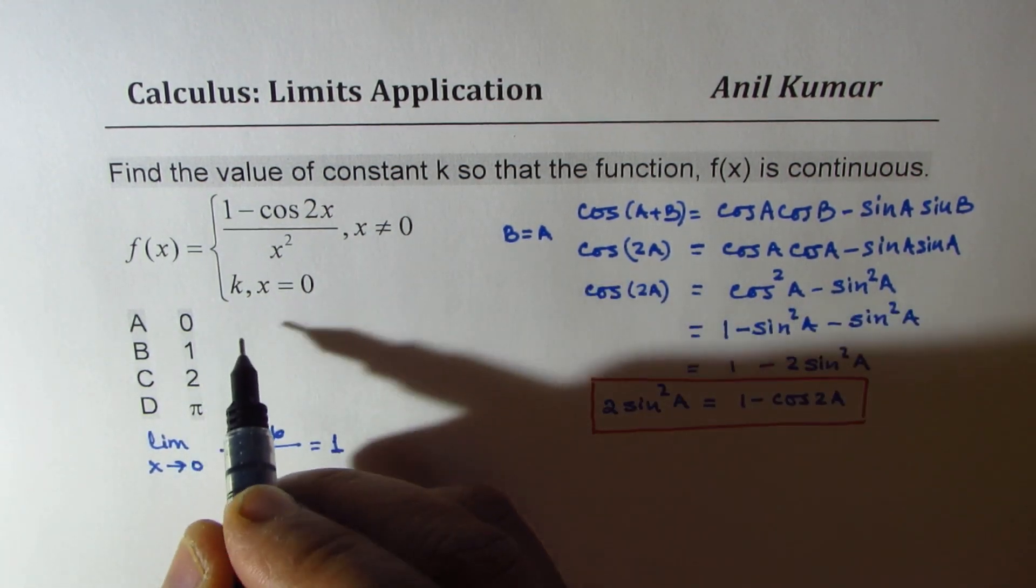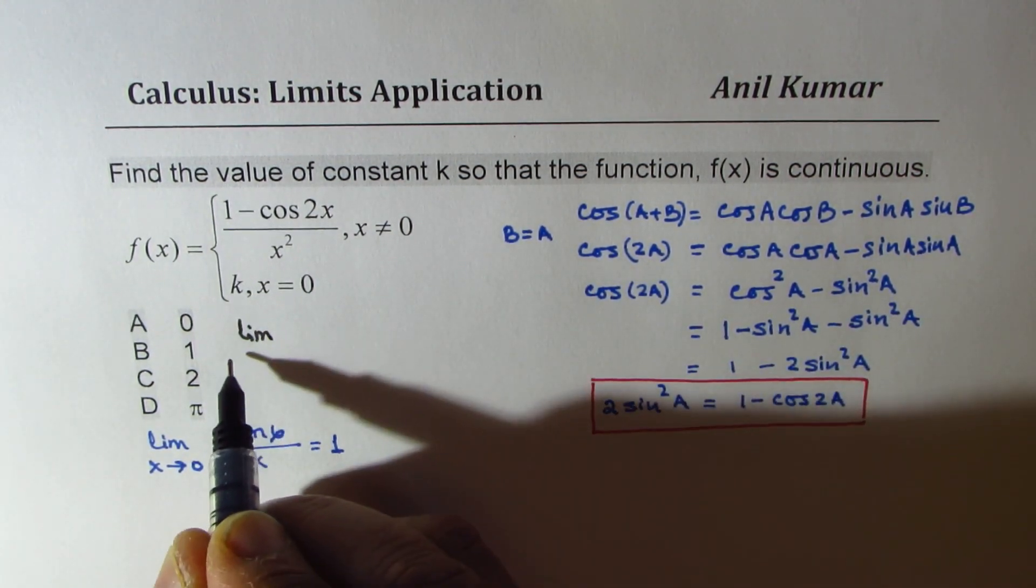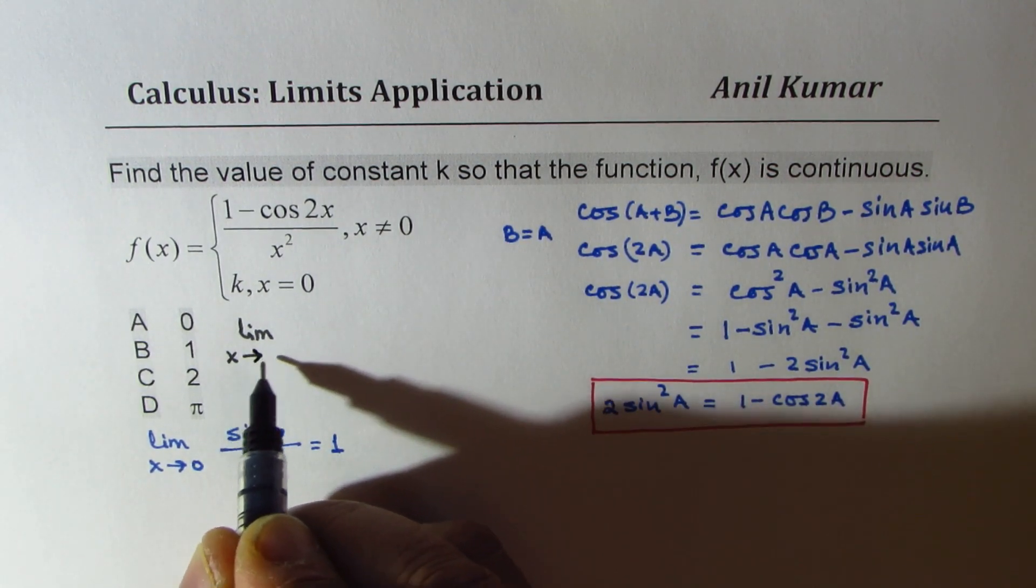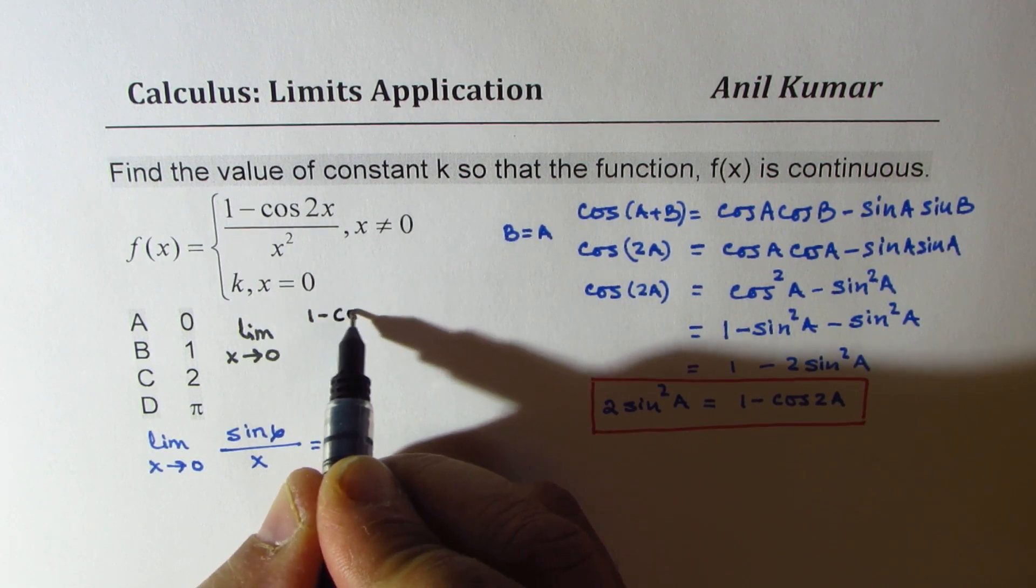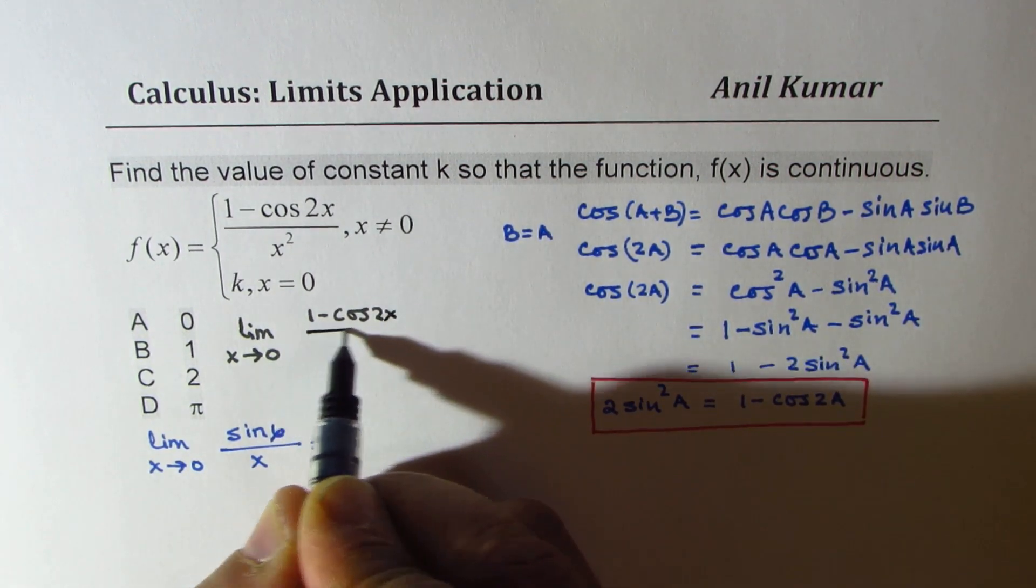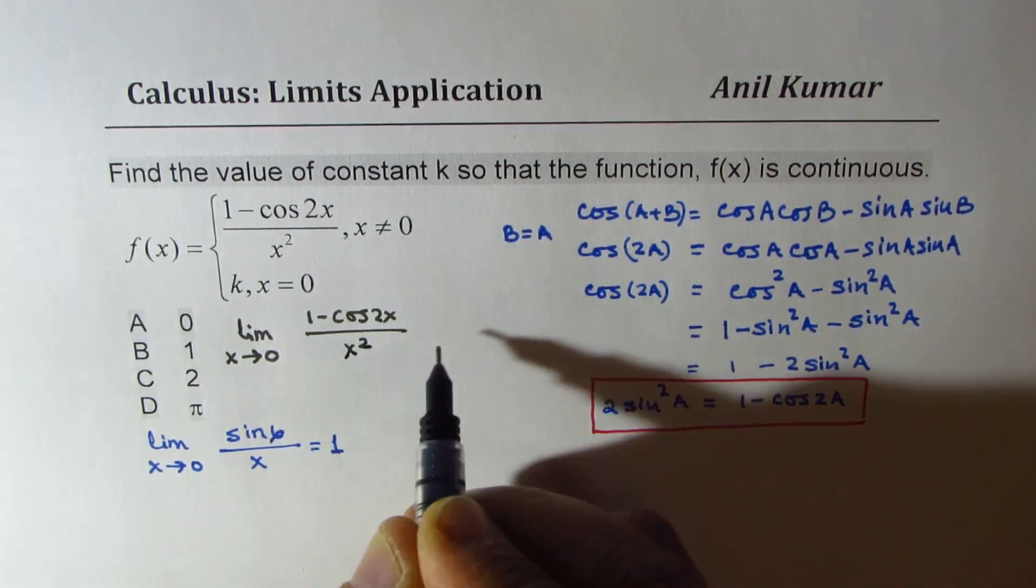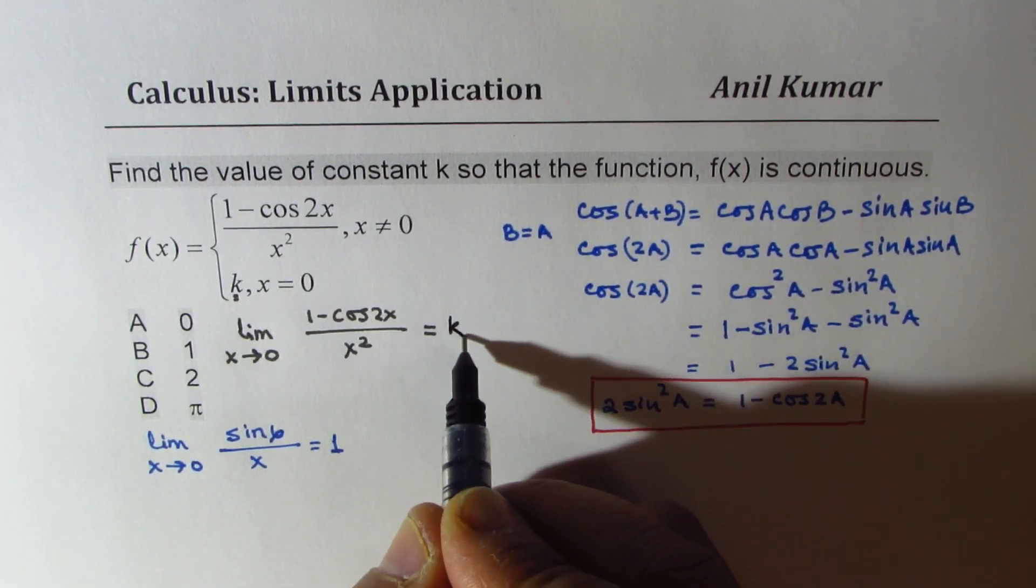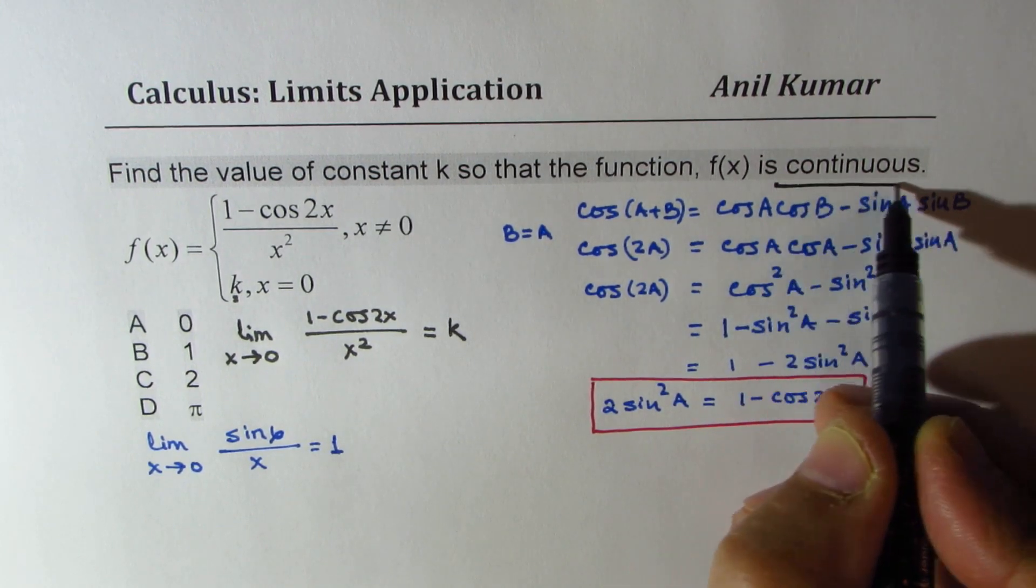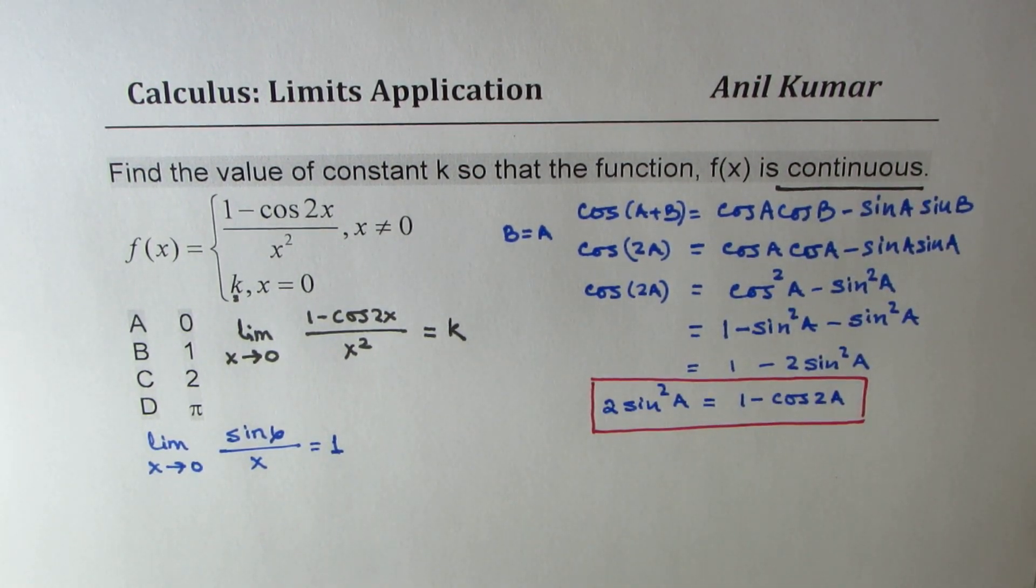So the concept here is that the limit when x approaches 0 for 1 minus cos 2x over x squared should become k for this function to be continuous. Is that okay? So that is the condition for the function to be continuous.